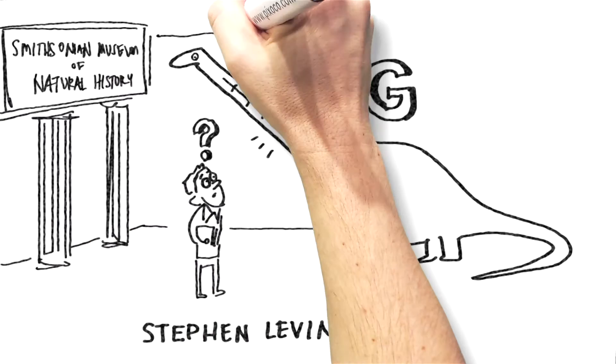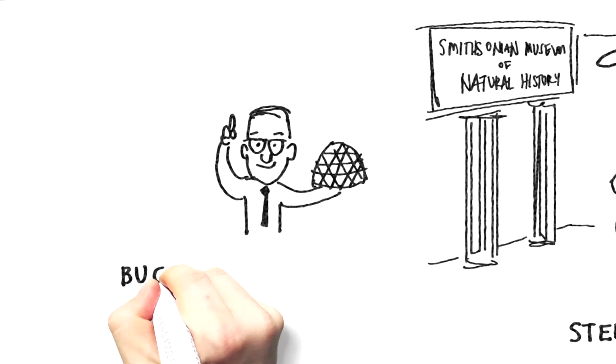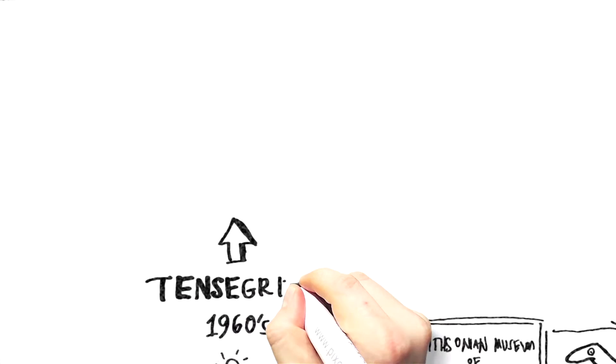Levin knew that he was onto something, and recalled something that he had read about. Tensegrity, a structural principle coined by architect Buckminster Fuller ten years earlier, where hard parts like struts and soft parts like ropes create a flexible force through the combination of tension and stability.